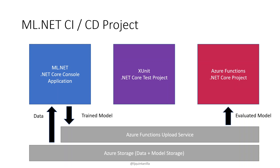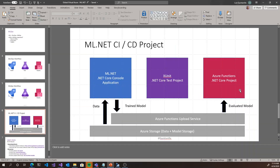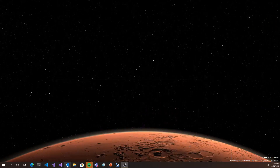That's one of the deployment pieces — putting the model somewhere your downstream application can locate it. In the deploy step, you'll also have an Azure Functions .NET Core project. The Azure Functions project is a serverless application that hosts your model and accepts HTTP requests with comments. It then uses the model in the production blob container to make predictions and returns the prediction back to the user.